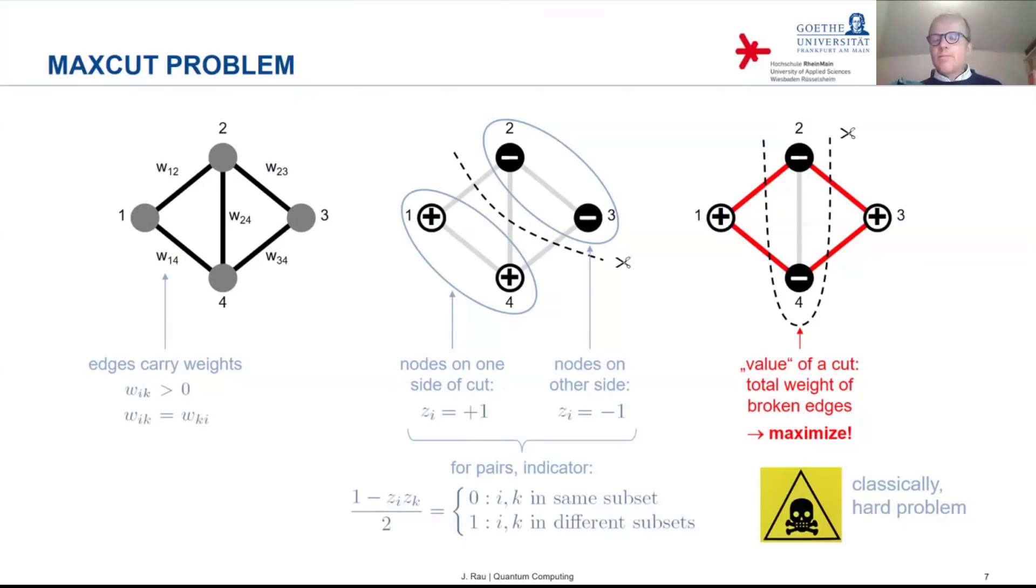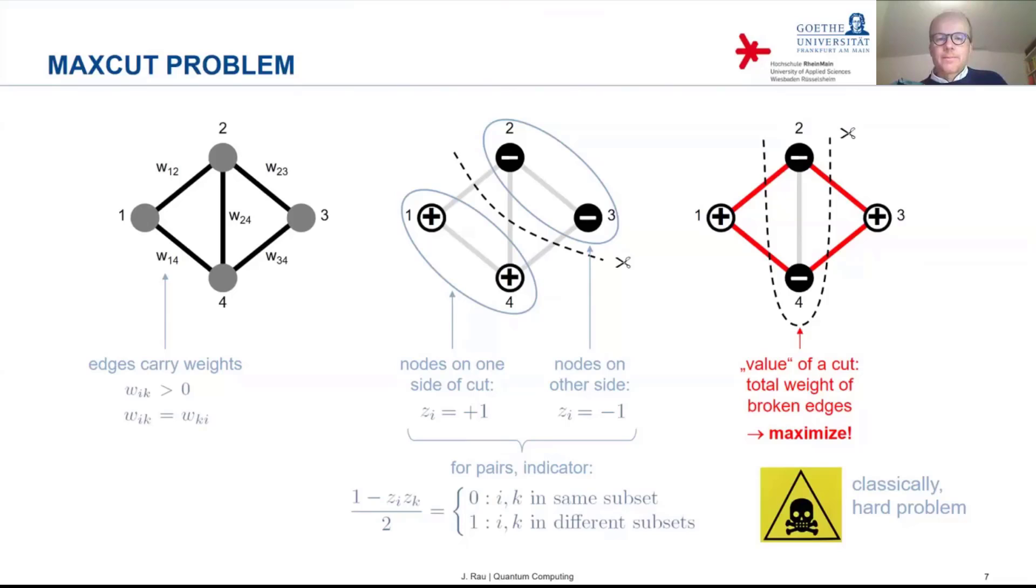Now, so this is one particular example of a classical optimization problem. We can relate such a problem to the problem of searching the ground state of an assembly of qubits in the following way.